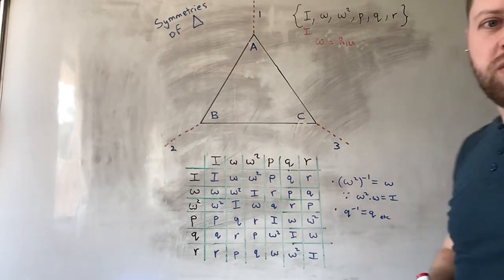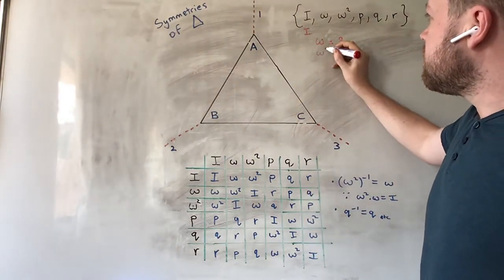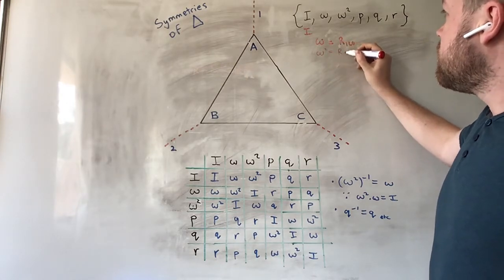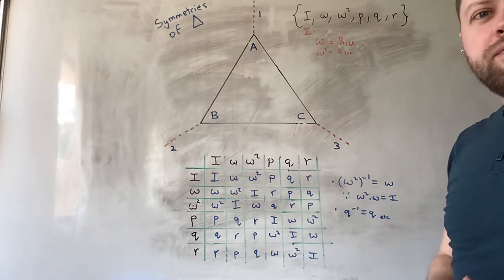If omega is rotation of 120 degrees, omega squared is rotation of 240 degrees.